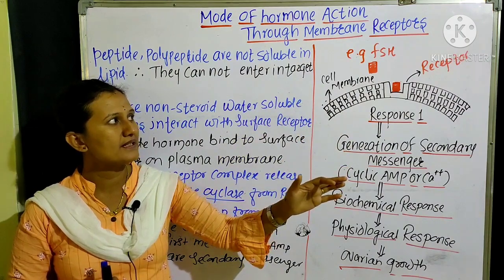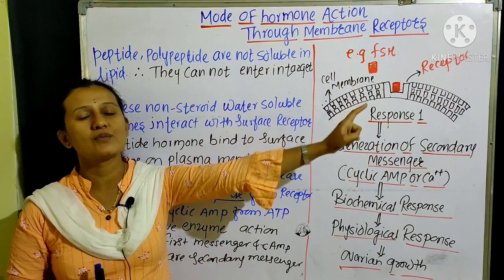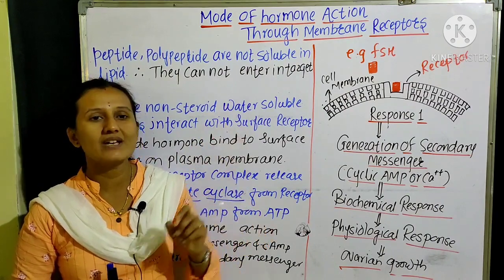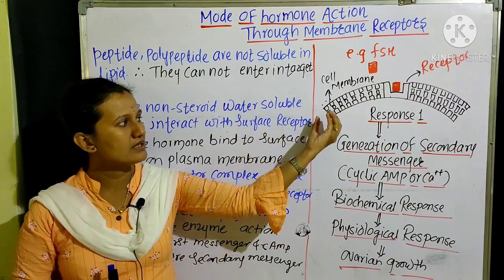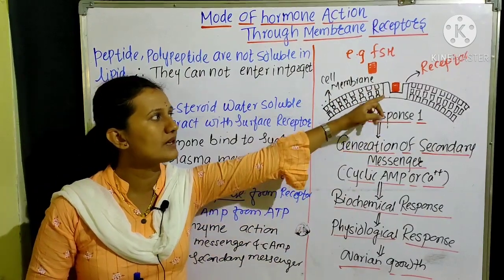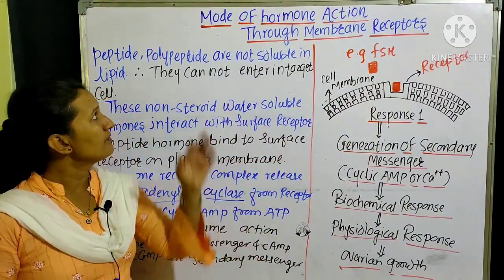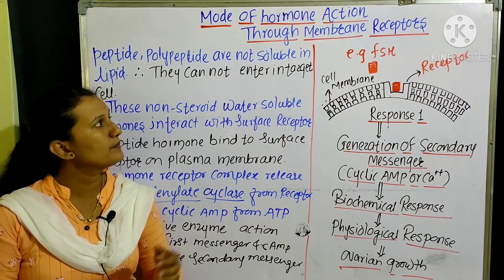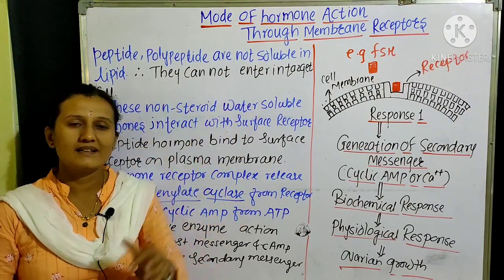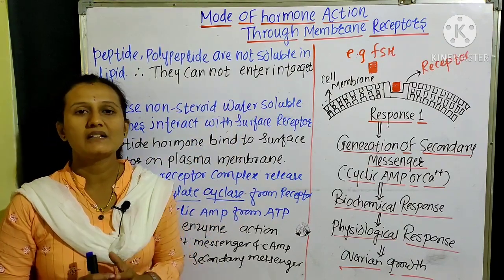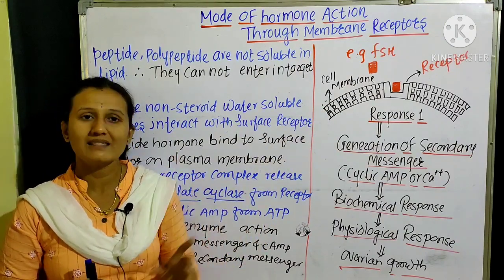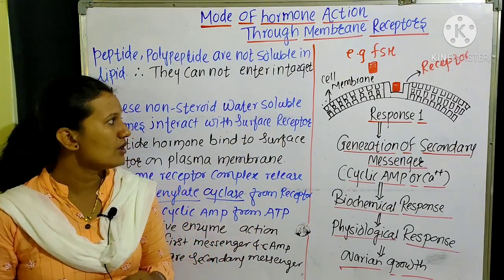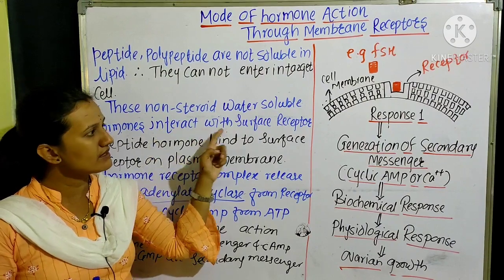FSH, shown in red, is a follicle stimulating hormone produced by the anterior lobe of the pituitary gland. It acts on the female ovaries, and the ovaries receive FSH through molecules on the receptor. Polypeptides, peptides, and catecholamines are not soluble in lipids, so they cannot enter the target cells directly. Instead, they interact with molecules on the surface of the cell membrane, which are called surface receptors. The non-steroid, water-soluble hormones interact with surface receptors.